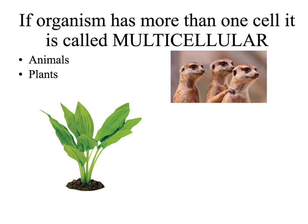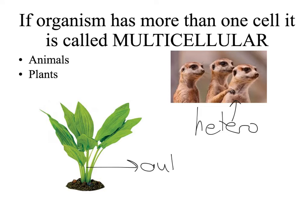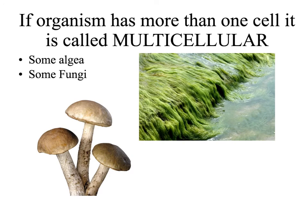For example, cats are animals and they are heterotrophic. But plants can produce their own food by photosynthesis, therefore they are autotrophic. Both animals and plants are eukaryotic organisms — both have a nucleus in their cells.